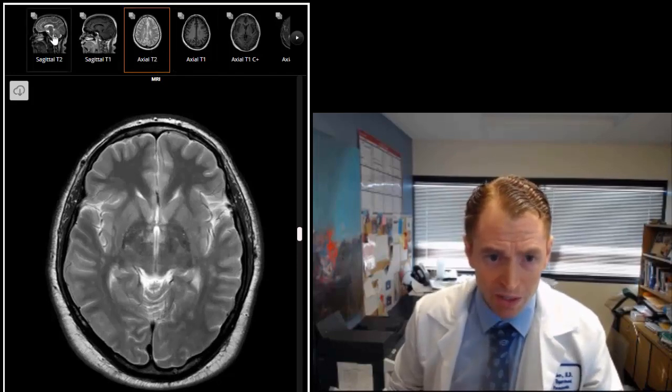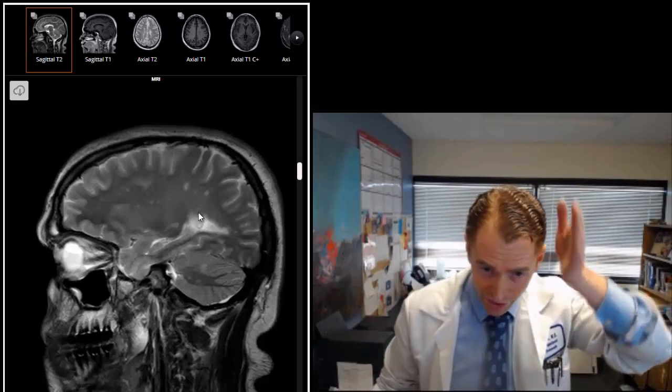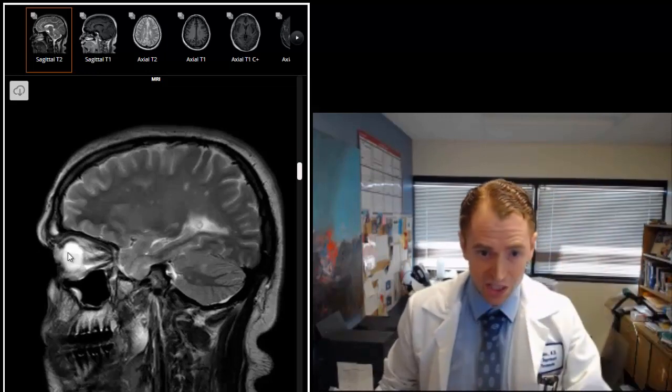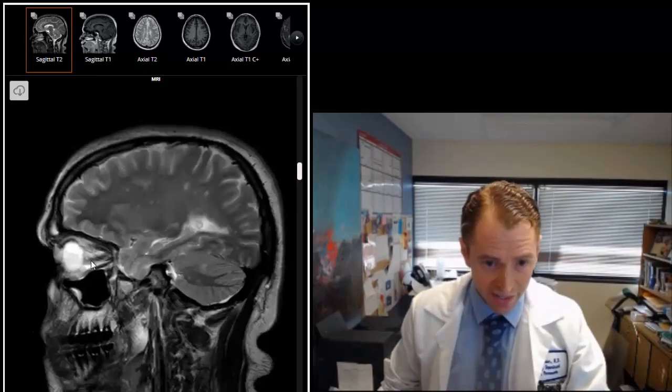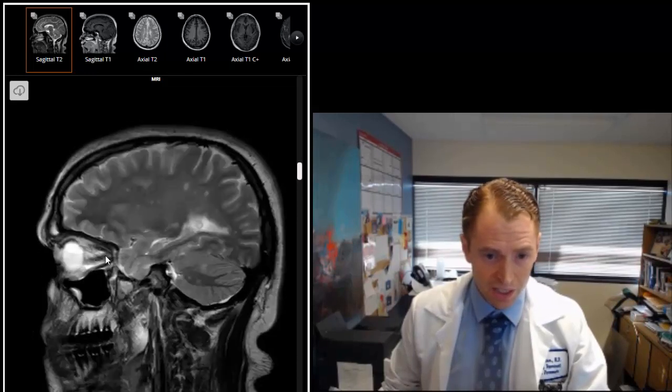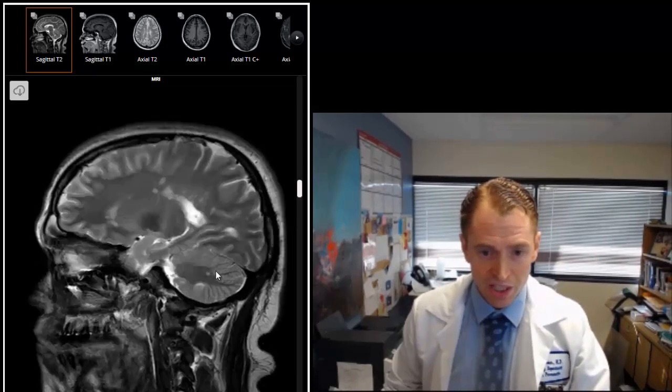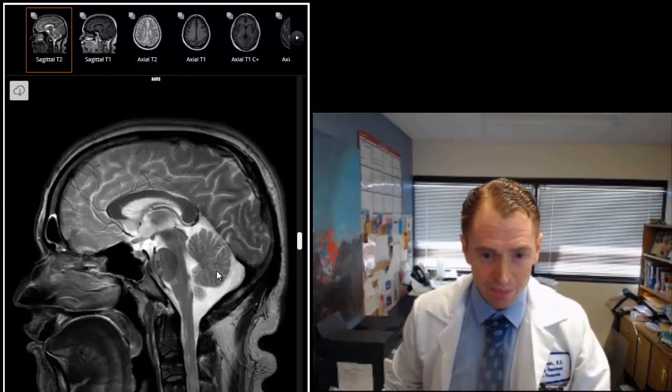Now we'll look at some other sequences. These are sagittal images so we're sort of looking at slices through the brain like this. So this is the eye. These are sort of the extraocular muscles. For instance, this is the lateral rectus that moves the left eye to the left. You can see the teeth here. You can see the cerebellum in the back of the brain. You can see the brain stem and spinal cord.